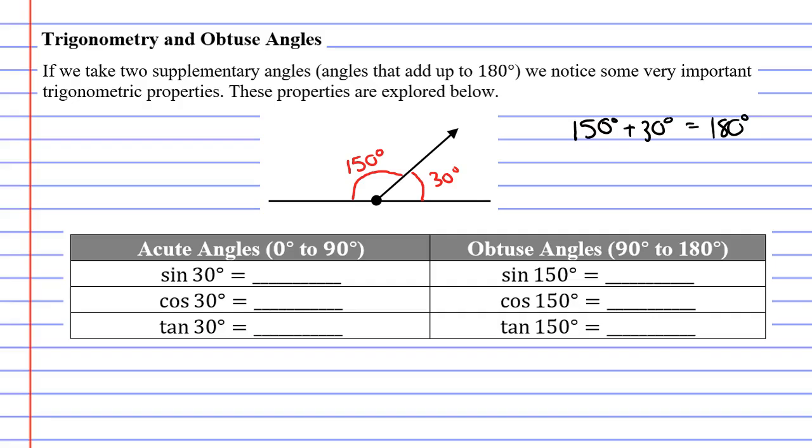Supplementary angles are angles that add up to 180 degrees, so we would say 150 and 30 are supplementary angles. So we're going to explore some things with supplementary angles. I also want to explain what obtuse and acute means in case you've forgotten.